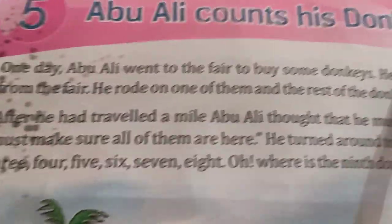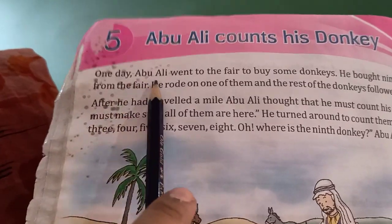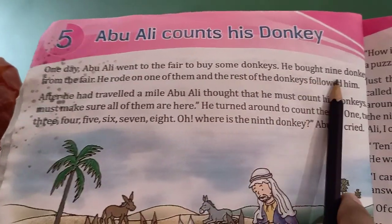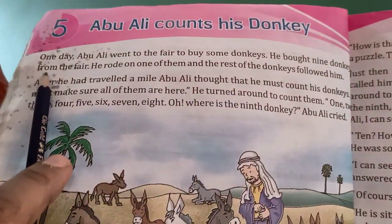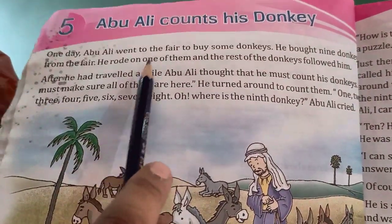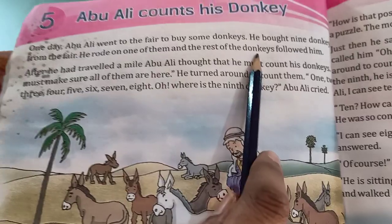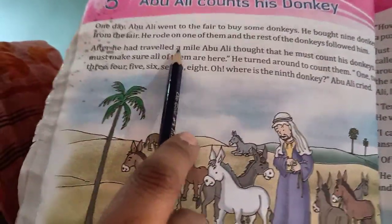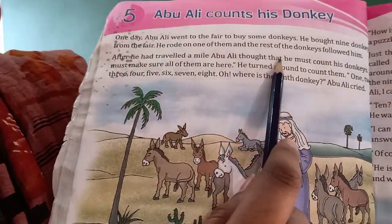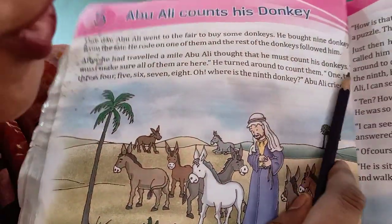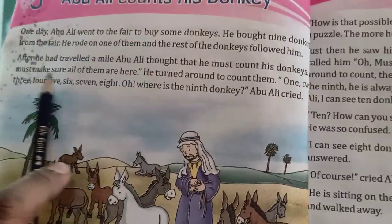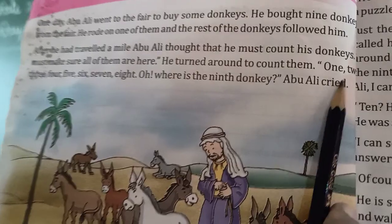Abu Ali Counts Donkeys. One day Abu Ali went to the fair to buy some donkeys. He bought 9 donkeys from the fair. He rode on one of them and the rest of the donkeys followed him. After he had travelled a mile, Abu Ali thought that he must count his donkeys.